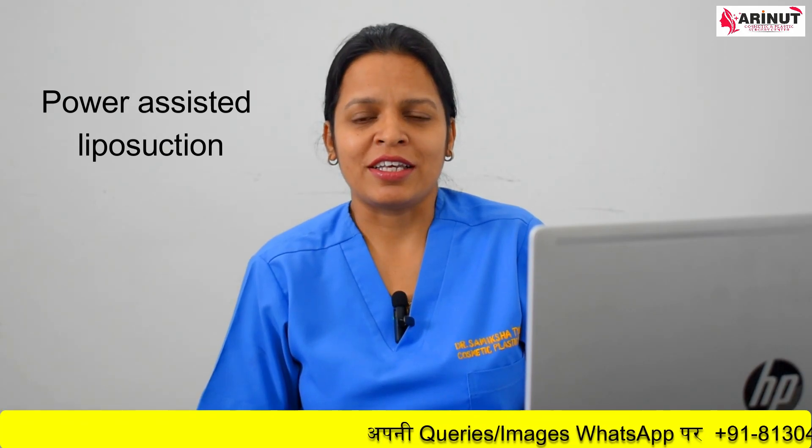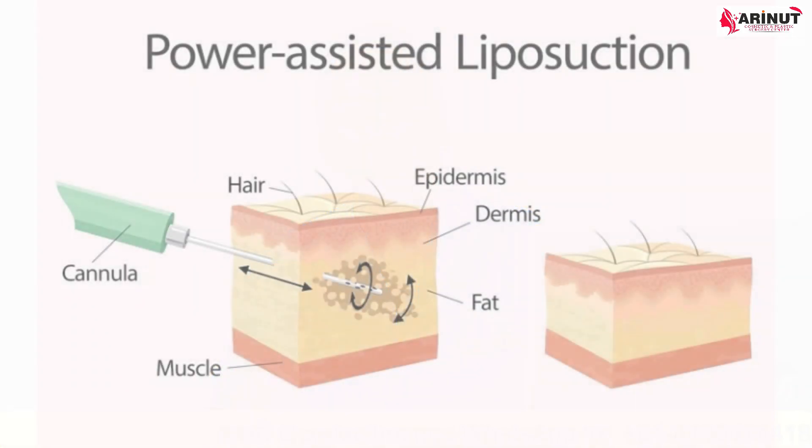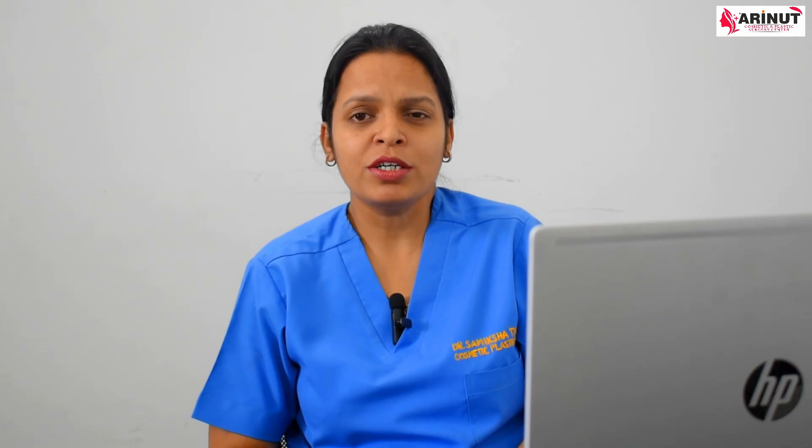The next technique is power assisted liposuction, which is a surgeon-friendly technique. In this technique, the cannula moves to and fro, and this mechanical movement breaks down the fat cells. The cell breakdown process is faster in power assisted liposuction, and once the fat cells are broken down, the fat can be sucked out.